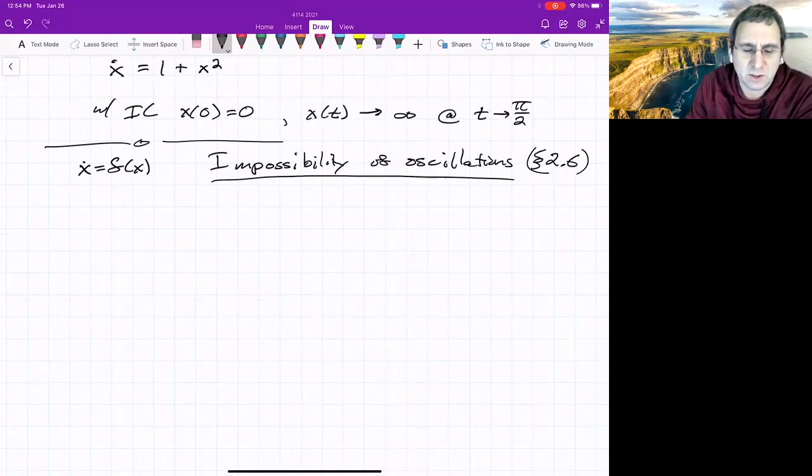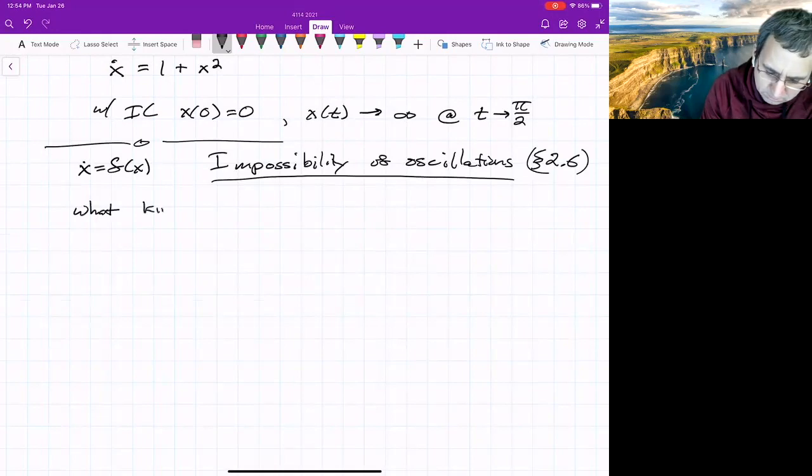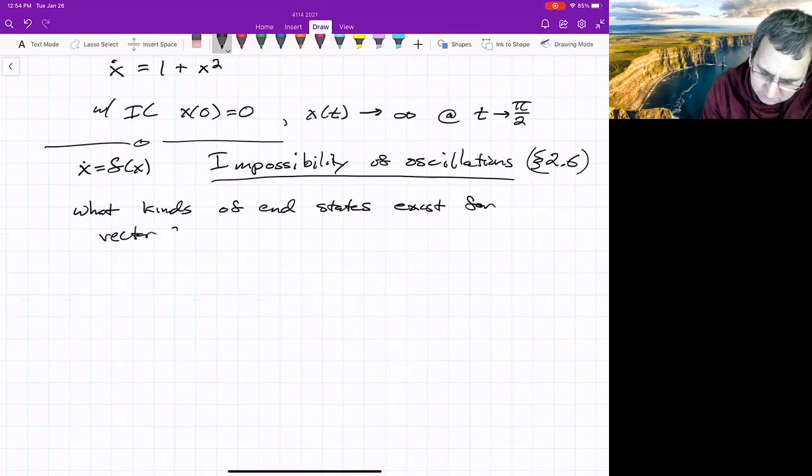What things can happen for a vector field on the real line? So what kinds of end states exist for a vector field on the real line?